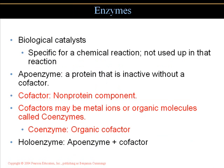Biological catalysts are specific for chemical reactions and are not used up in the reaction. There are substances referred to as apoenzymes — basically proteins — that are inactive without cofactors. Cofactors are non-protein components that are required; they may be metal ions such as iron, which we use to carry oxygen in red blood cells, or other organic molecules. When cofactors are organic molecules, they are referred to as coenzymes. Coenzymes are organic cofactors — carbon-based substances such as carbohydrates, proteins, and lipids.